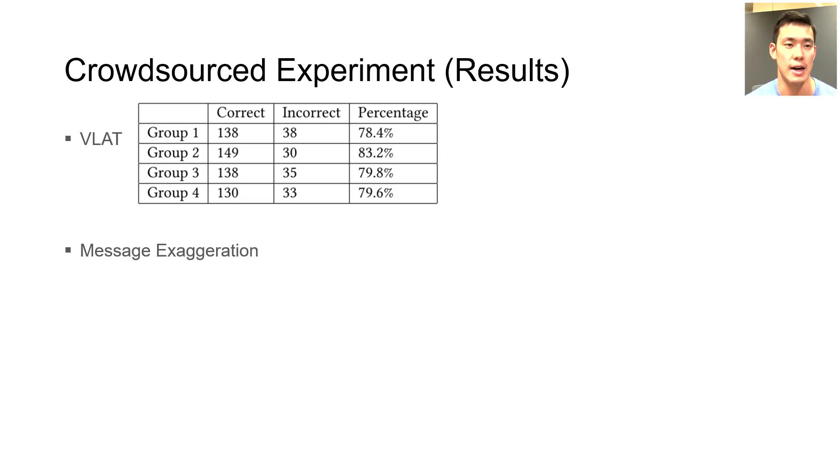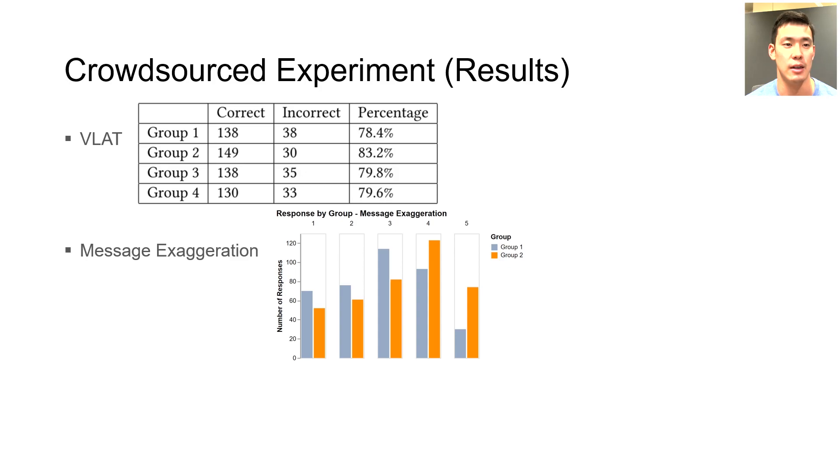Next, we analyzed the results of the message exaggeration experiment. Group 1 participants who had access to the tool were able to spot the truncated y-axis quickly, and thus answered 1 and 2 on the Likert scale more often.